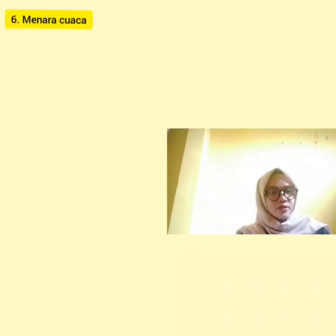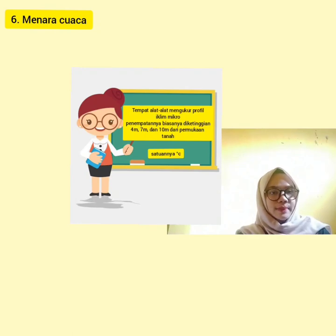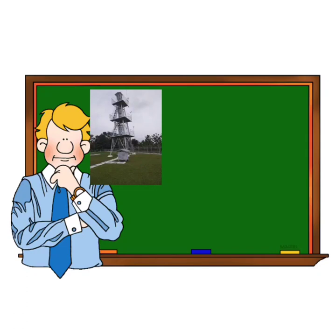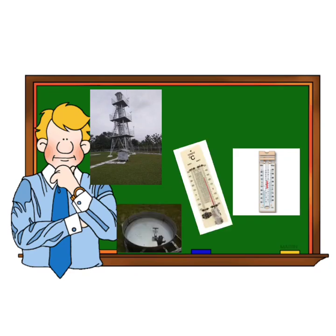Yang keenam adalah menara cuaca. Fungsinya untuk menempatkan alat-alat yang mengukur iklim mikro. Satuannya adalah derajat celcius. Pengamatan dilakukan dengan dilengkapi termometer bola basah, bola kering, maksimum, minimum, dan piche evaporimeter.